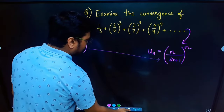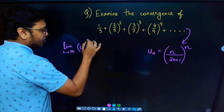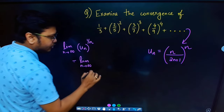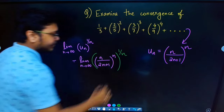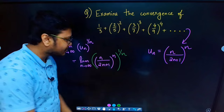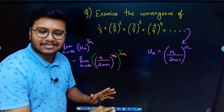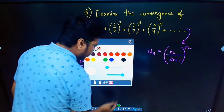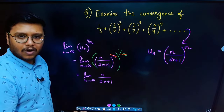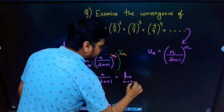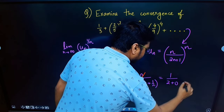Computing the limit: u_n^(1/n) = [(n/(2n+1))^n]^(1/n) = n/(2n+1). The powers cancel, leaving a simple expression. Taking n common: limit of n/(2n+1) = 1/(2 + 1/n) → 1/2 as n→∞. Since 1/2 < 1, by Cauchy's root test, the given series is convergent.